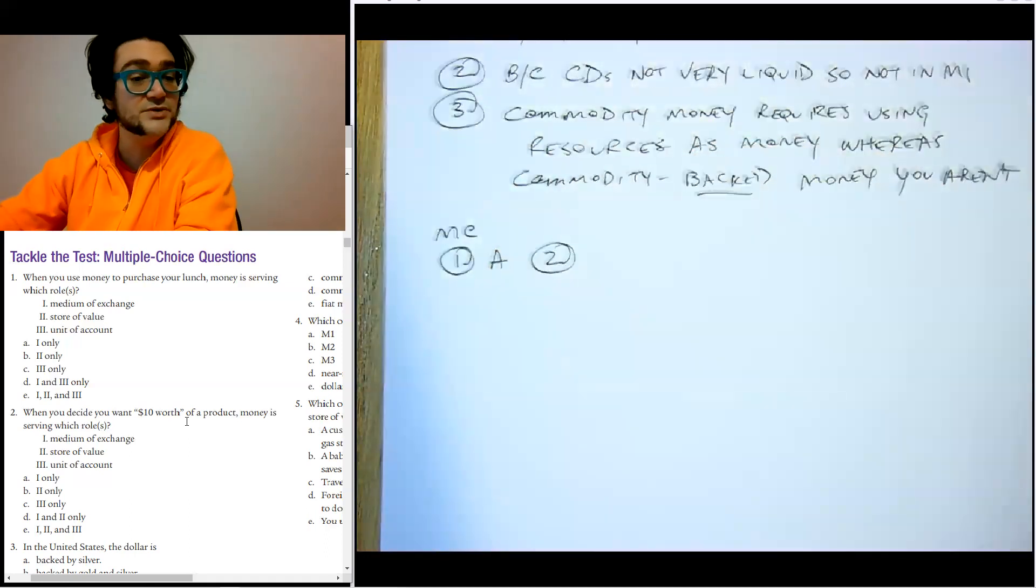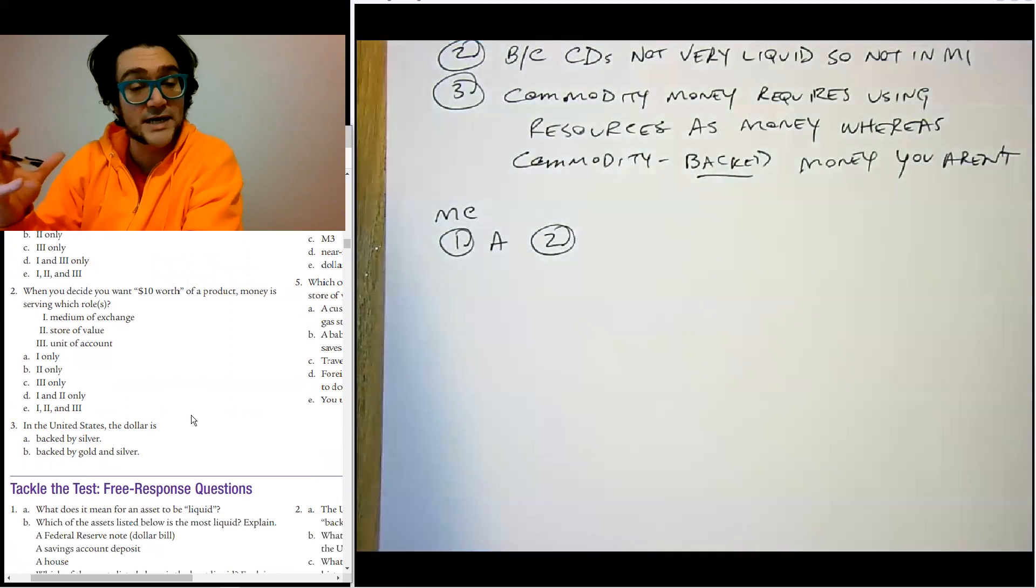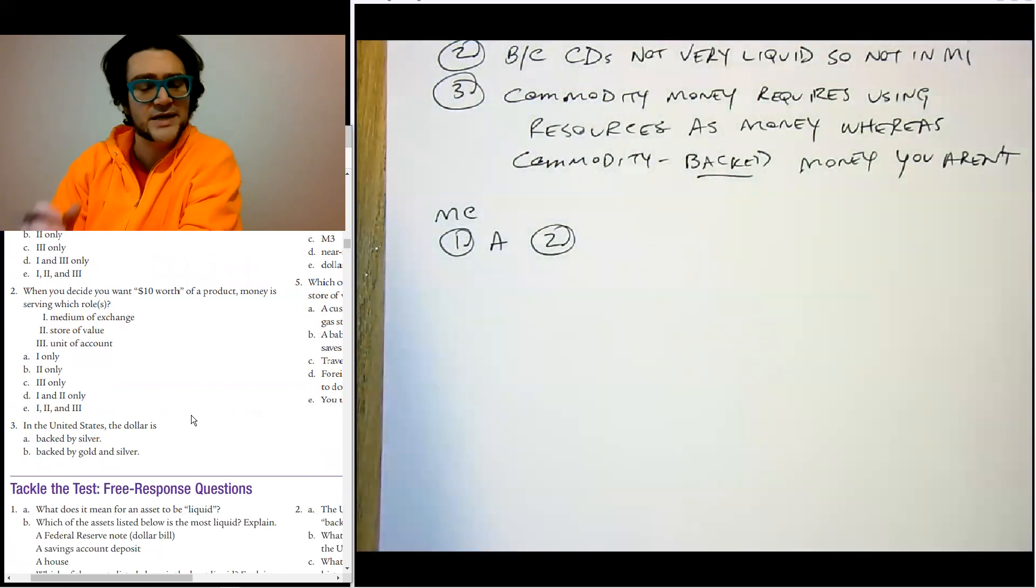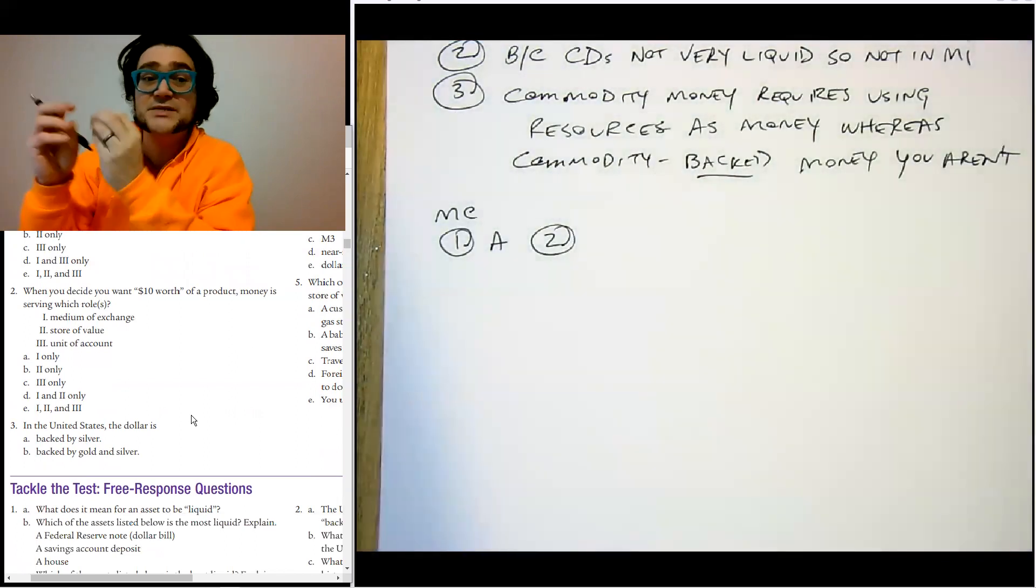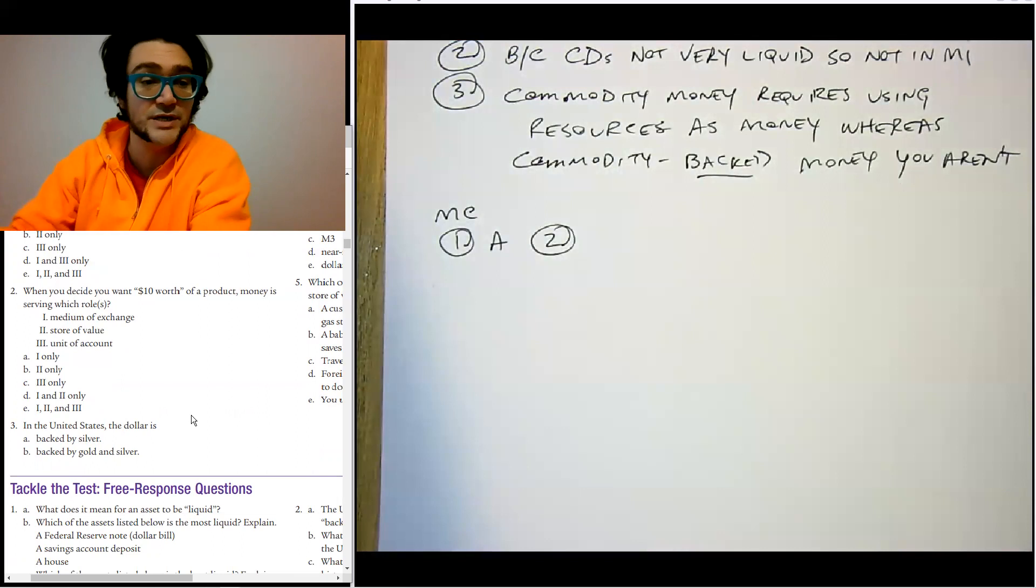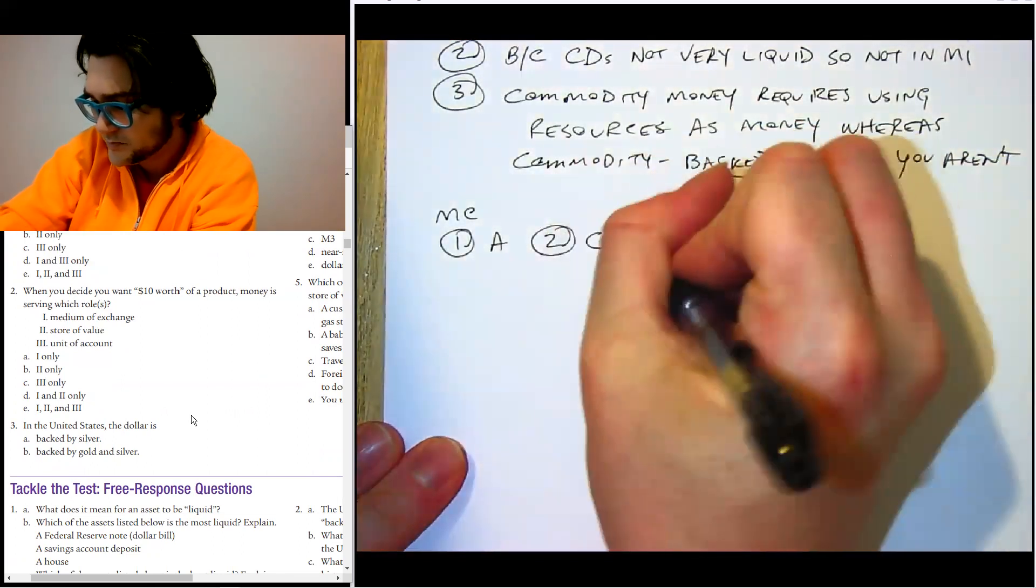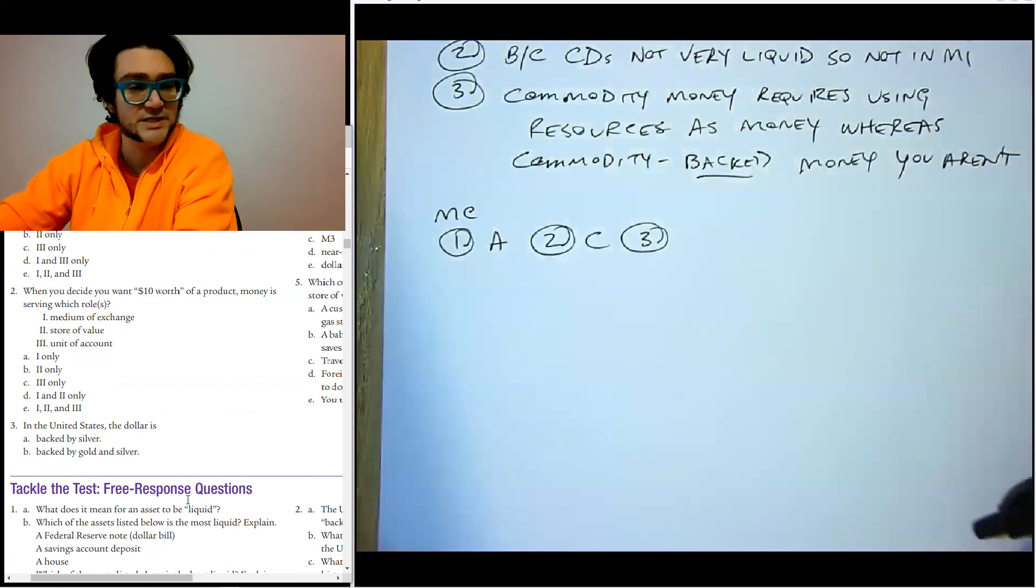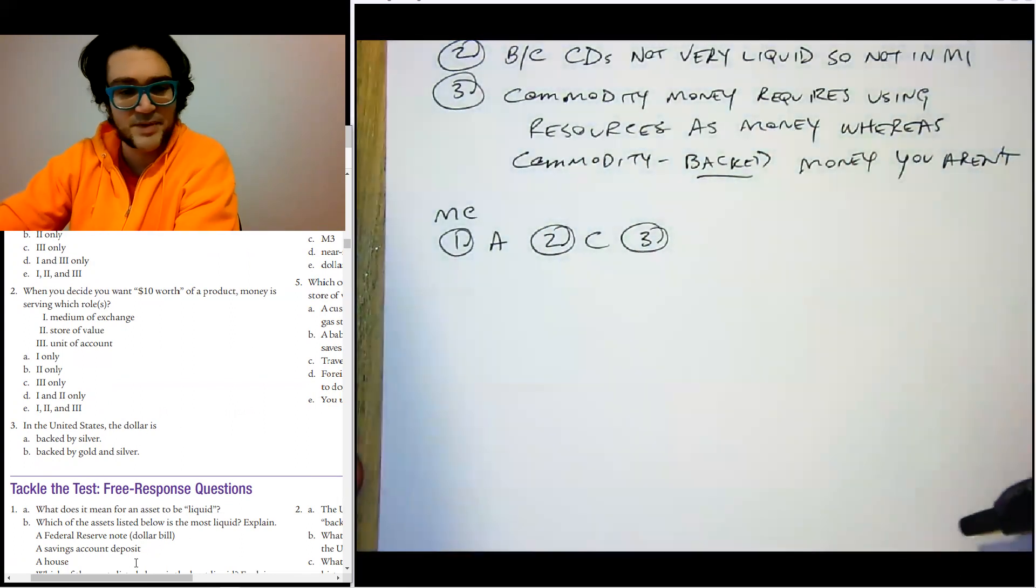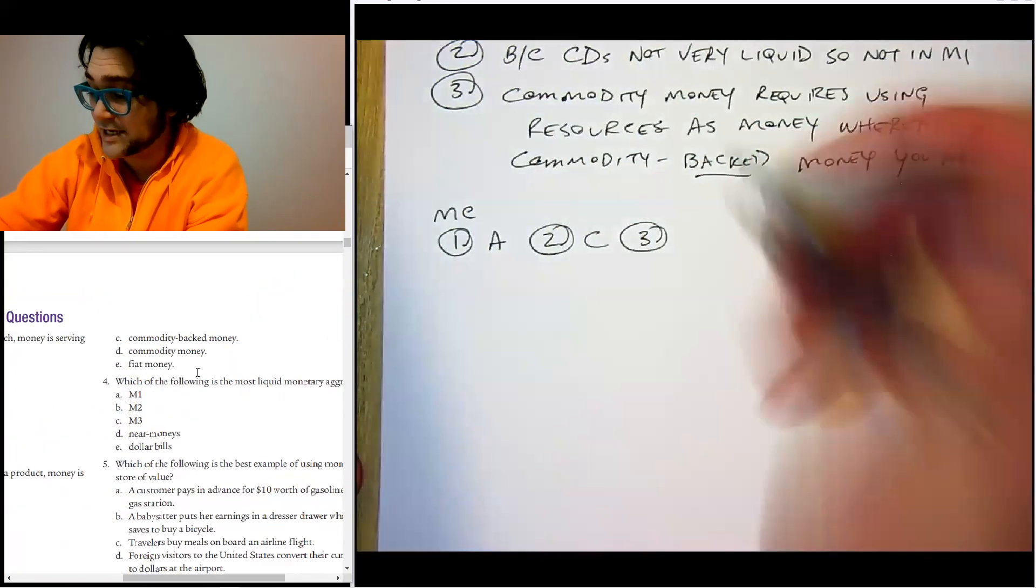Number two, when you decide you want $10 worth of something, money is serving as what? That's the unit of account, right? That's the idea of saying, I want this many units worth of money or of sandwiches or of something. You're using money as the unit in that case. So that's three only C. I like that these questions are back to back so you can really see the difference. In the U.S., the dollar is, well, it's not backed by anything. It's fiat money now. So the correct answer is E.